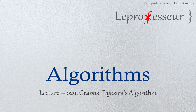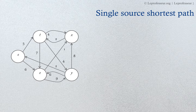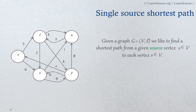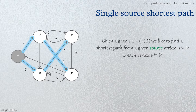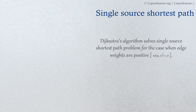Hello everyone. In this lecture we're going to be discussing Dijkstra's algorithm for finding single source shortest paths. In the previous lecture we were discussing Bellman-Ford's algorithm. So essentially, what do we mean by single source shortest paths? For example, we have been given a graph and the idea is that we'd like to find the shortest path from a given source vertex.